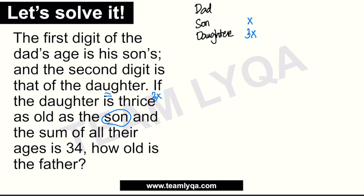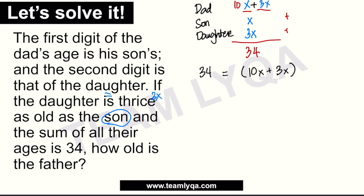Now for the dad's age: the first digit is the son's age (x), multiplied by 10, plus the second digit which is the daughter's age (3x). So the dad's age is 10x + 3x. The sum of all their ages must equal 34. So: 34 equals the dad's age (10x + 3x), plus the son's age (x), plus the daughter's age (3x).